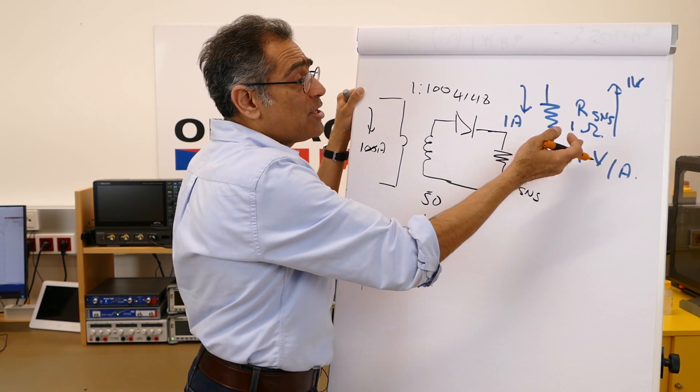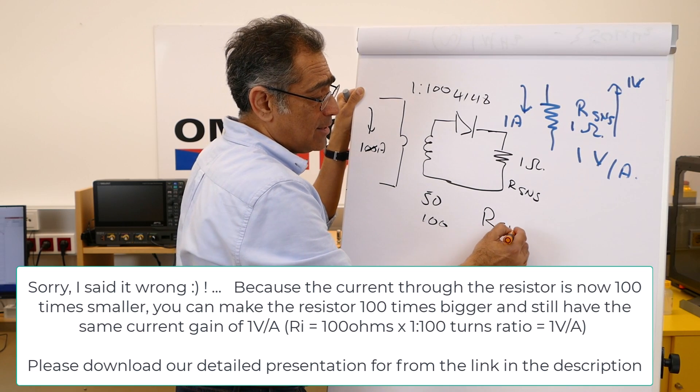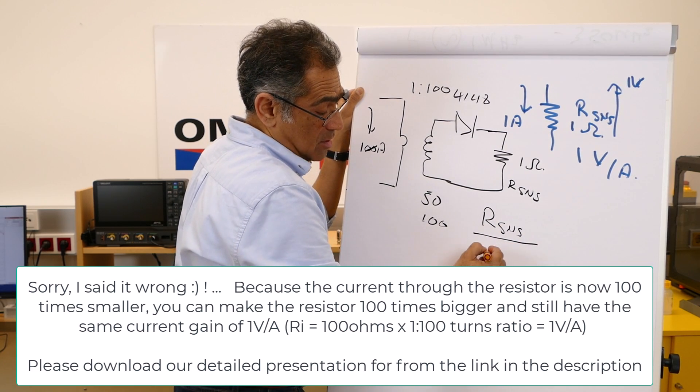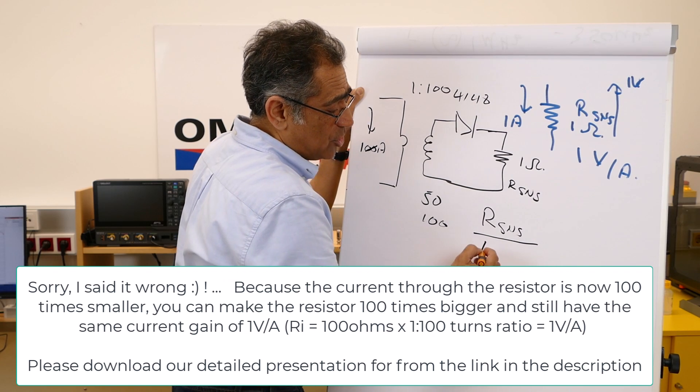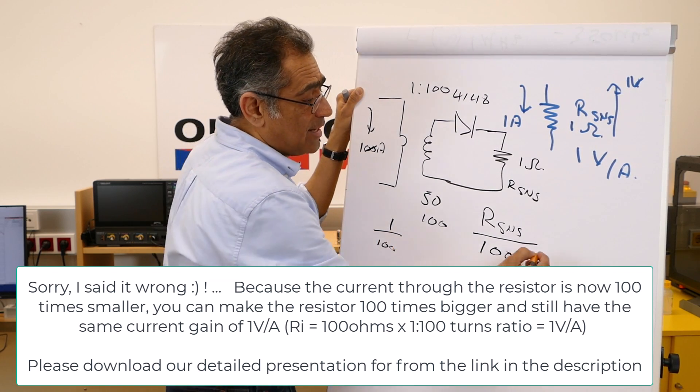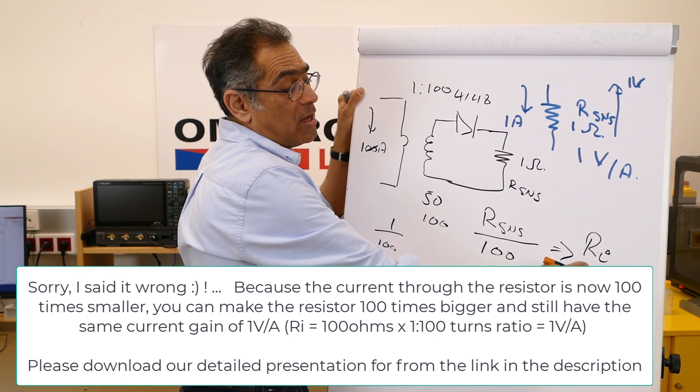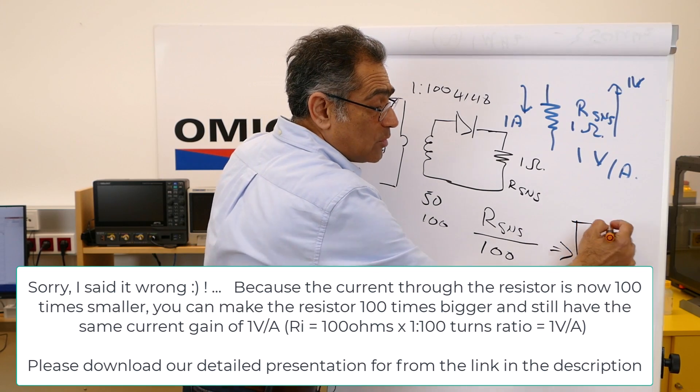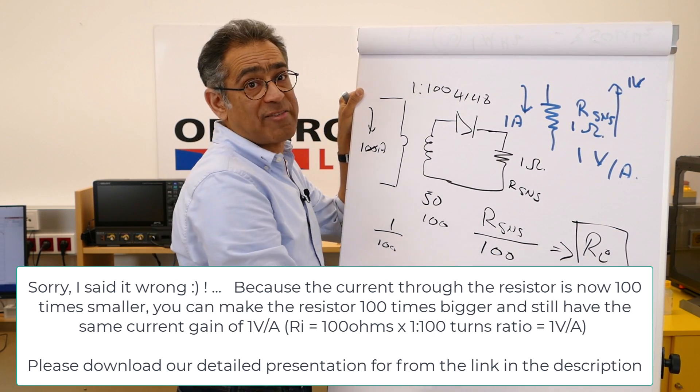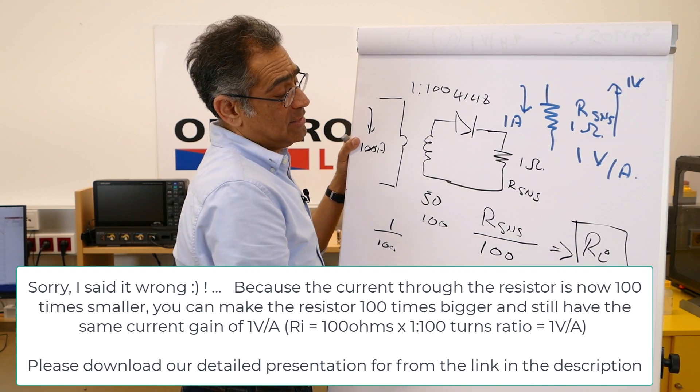But your volts per amp will be still exactly the same. So you have your R sense divided by, well multiplied by the turns ratio. In our case the turns ratio was 1 to 100. And that is what we now call the current gain. And if you're calculating your control loop by hand, you need this value. If you're using an automated tool such as WDS, you still have this value.